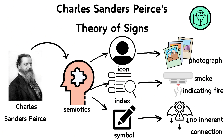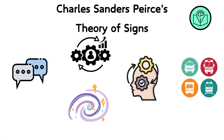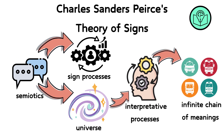An index has a direct, causal link to its object, like smoke indicating fire. A symbol, however, has no inherent connection to what it represents; its meaning is purely conventional and learned, such as language or road signs. Peirce's semiotics extends beyond just linguistic signs to include all kinds of sign processes. He saw the universe as fundamentally composed of signs and interpretative processes, which he called semiosis.